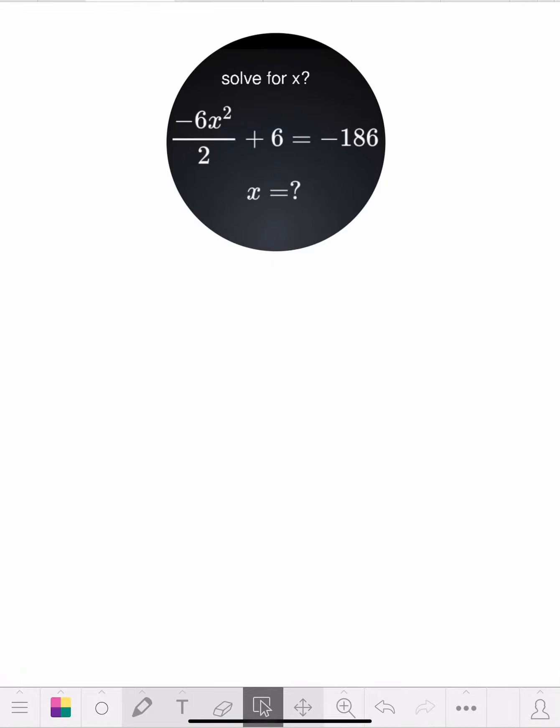Hello class, Mr. Stone here. The problem I found online today looks pretty neat. It says solve for x. So now let's see what you have. You have negative 6x squared over 2 plus 6 equals negative 186.